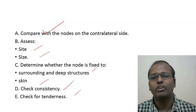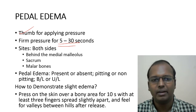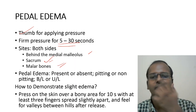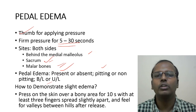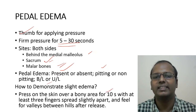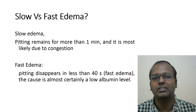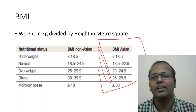For pedal edema, apply firm thumb pressure for five to thirty seconds. Sites include behind the medial malleolus (most common in ambulant patients), the sacrum (if the patient is bedridden), and the malar bones. Comment whether pedal edema is present or absent, pitting or non-pitting, and bilateral or unilateral. To demonstrate slight edema, press on a bony area for 10 seconds with three fingers slightly spread apart and look for valleys. Slow edema — pitting remains more than one minute — suggests congestive cardiac failure. Fast edema — pitting disappears in less than 45 seconds — suggests low albumin.